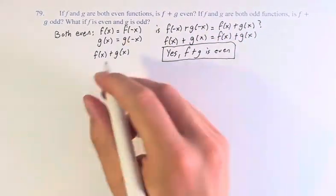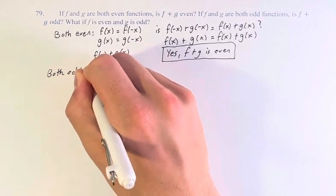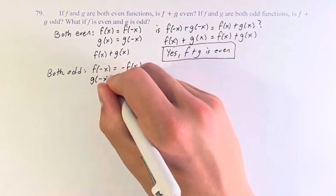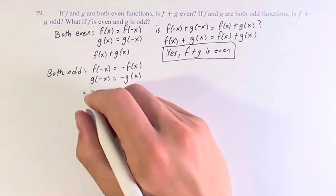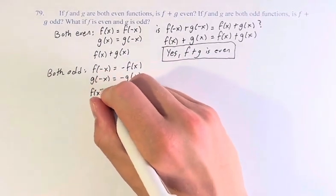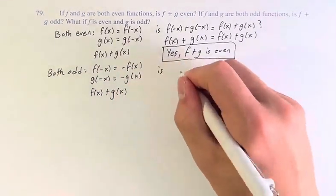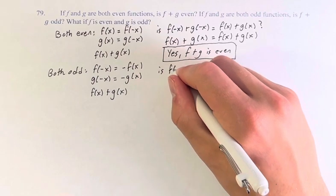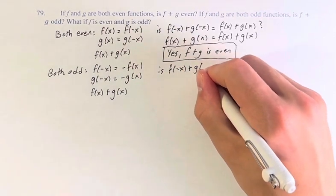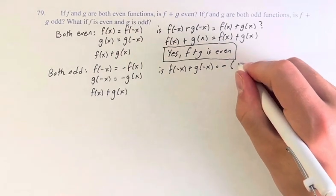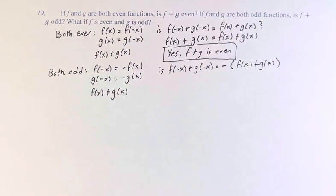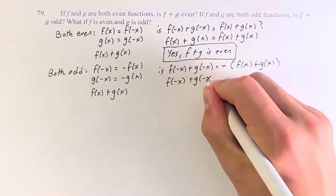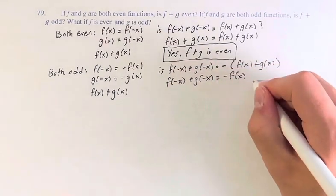That's our first part done. Now, if they're both odd, that means that f of negative x equals negative f of x, and g of negative x equals negative g of x. So now, is f of x plus g of x odd? We're therefore asking: is f of negative x plus g of negative x equal to negative parentheses f of x plus g of x, which distributes to negative f of x minus g of x?